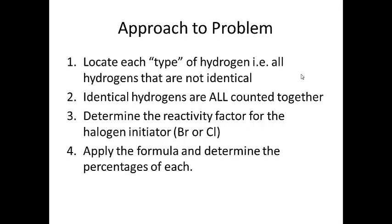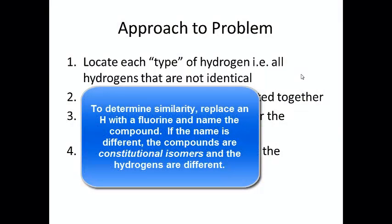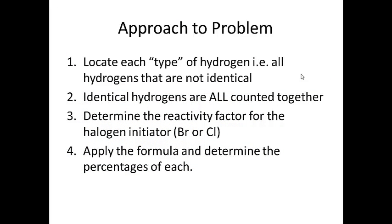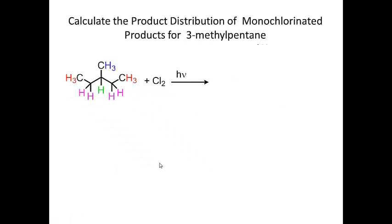The approach to these problems: first, look at the chain and locate each type of hydrogen — every hydrogen that is not identical is a possible site for abstraction and radical formation. Those radicals formed in propagation carry through to termination. Identical hydrogens are counted together when plugged into the formula. Determine the reactivity factor from the table — which will be provided on the exam — then apply the formula to determine percentages.